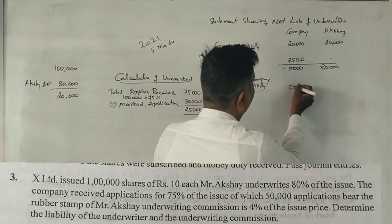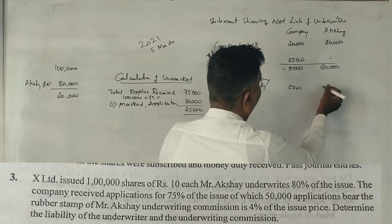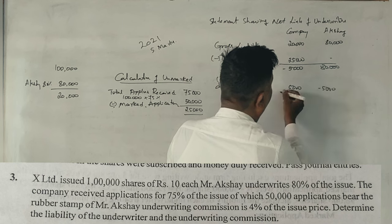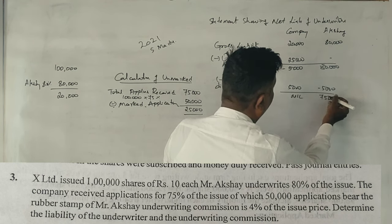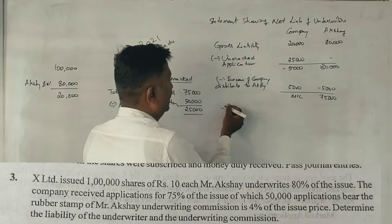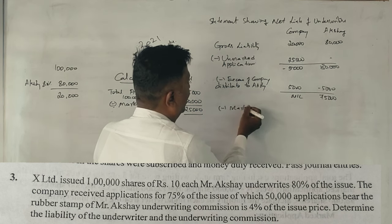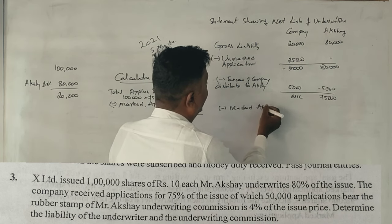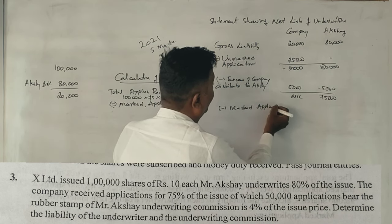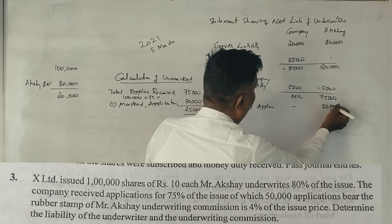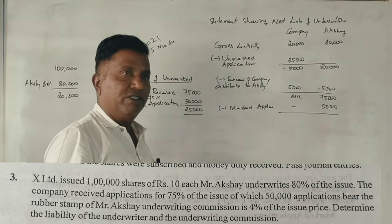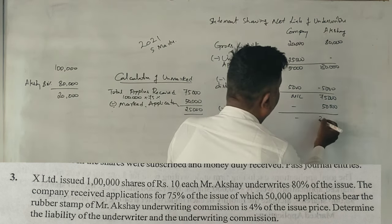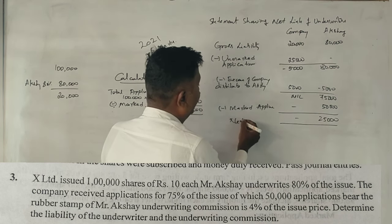The company's portion is about 5,000, and total IOS applications are about 75,000. There are about 5,000 IOS applications, and if you have 10,000 applications, the IOS is about 5,000 against 10,000 applications. From this, you get the net liability.